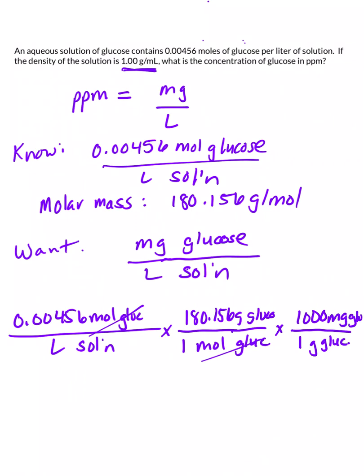And when we multiply all of this out, we end up with 822 milligrams of glucose per liter of solution.